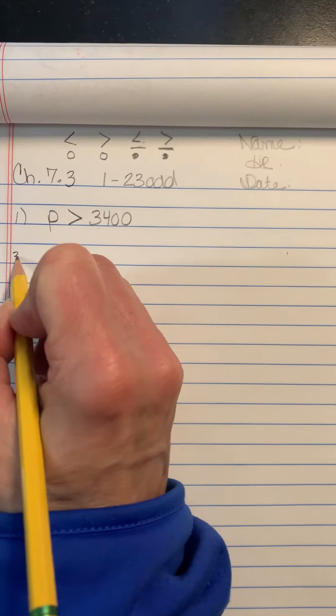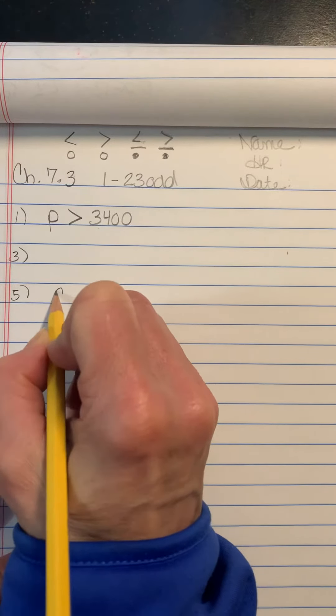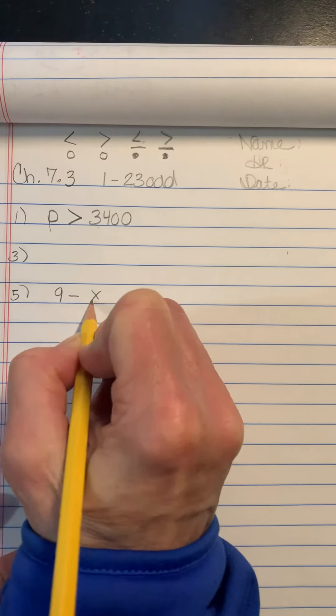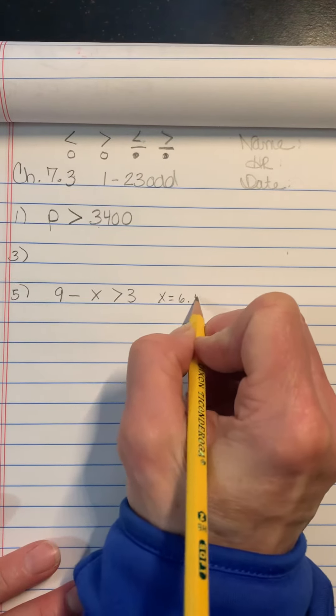Then you're going to skip down to number 5 and you're going to state whether it's true or false. So it's going to say 9 minus x greater than 3 if x is equal to 6 and 5 tenths.